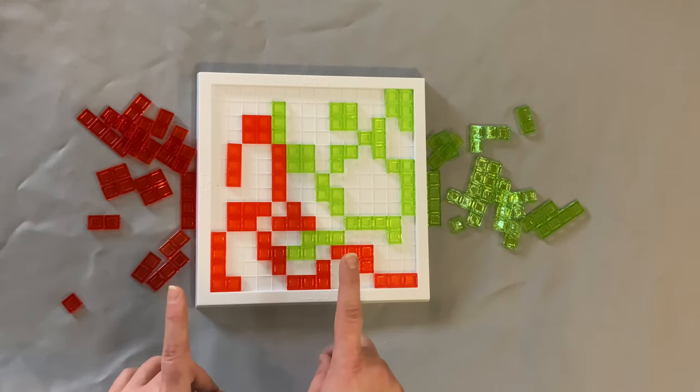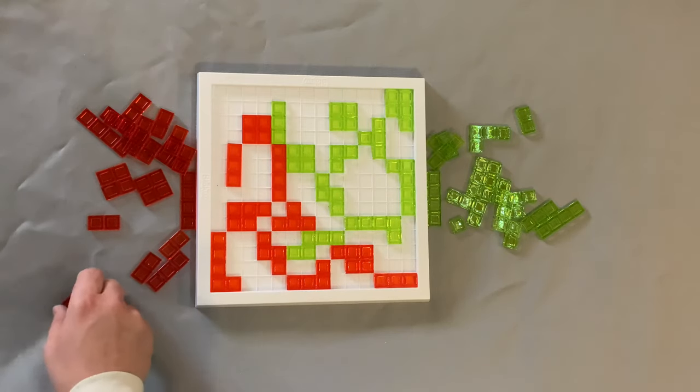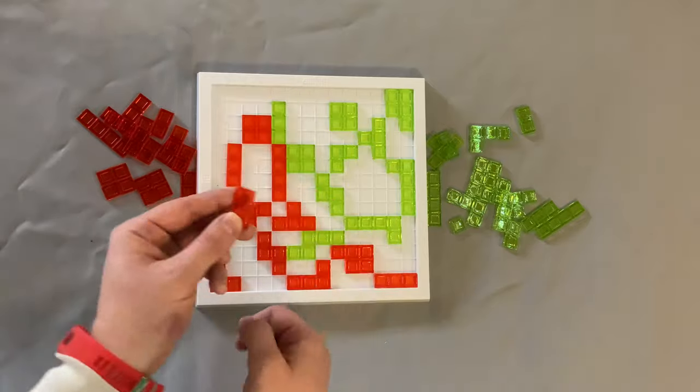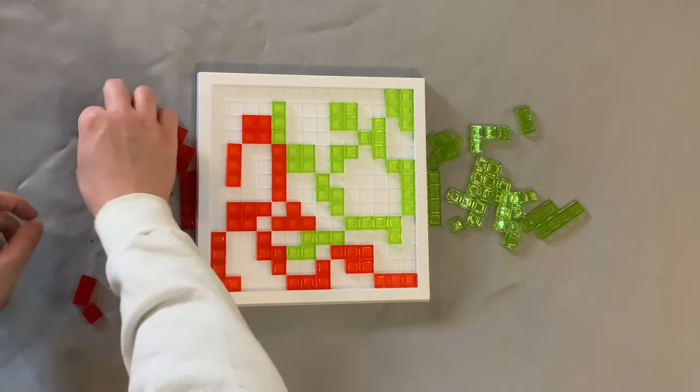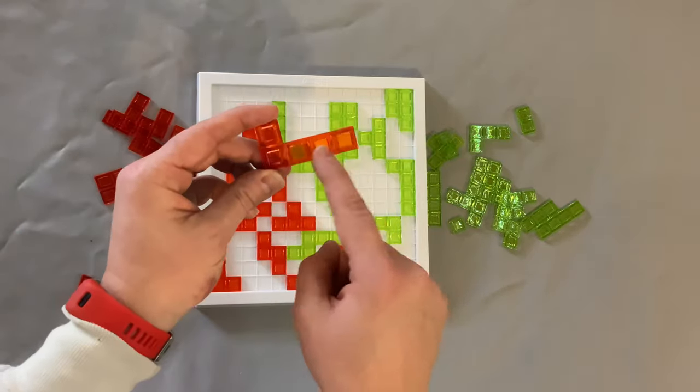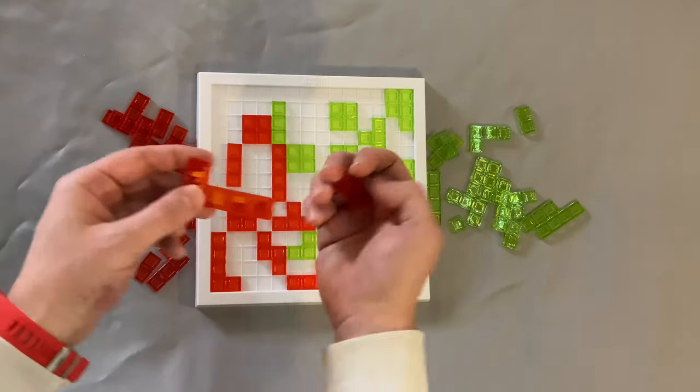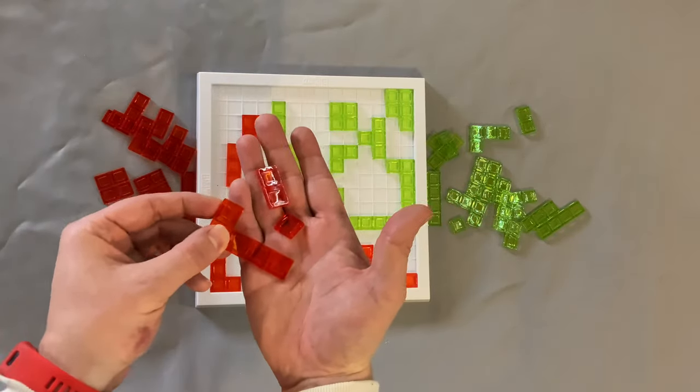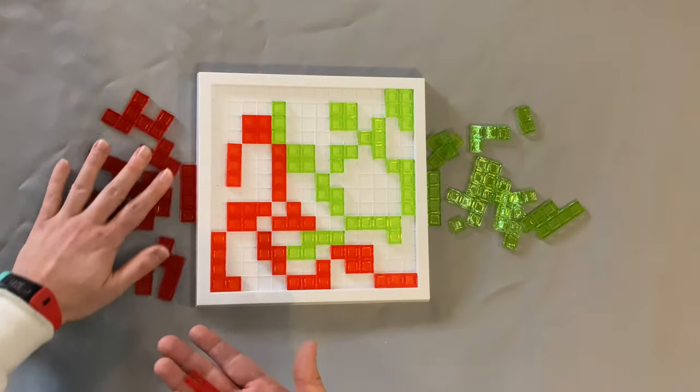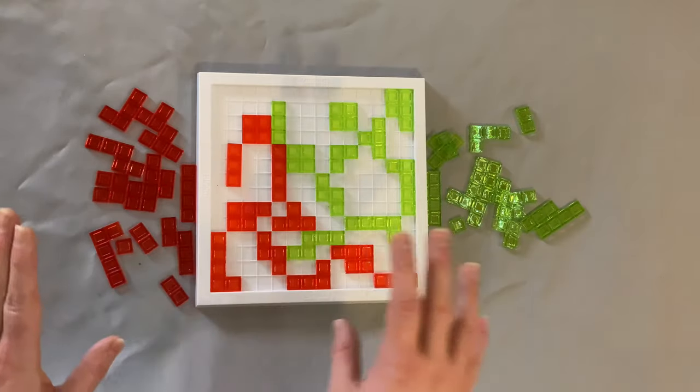Once the game ends players count the number of squares in their remaining pieces. So for instance this would be one square, this would be two squares, this one would be one two three four five squares. So right now I would have a grand total of eight squares right here and a whole boatload of other squares down here. Whoever has the fewest number of squares remaining wins the game.